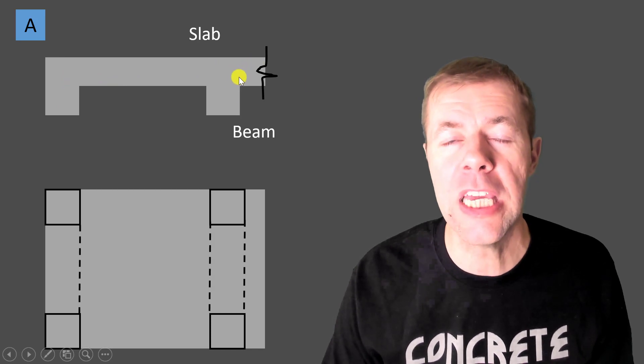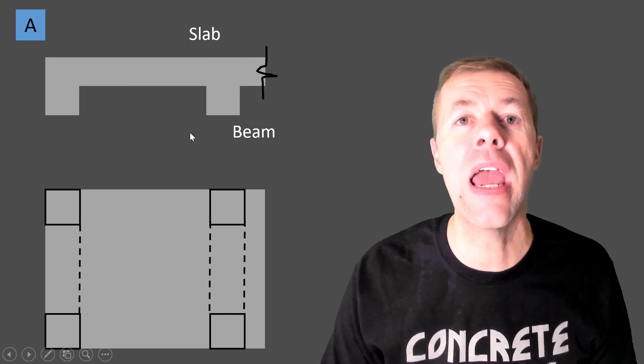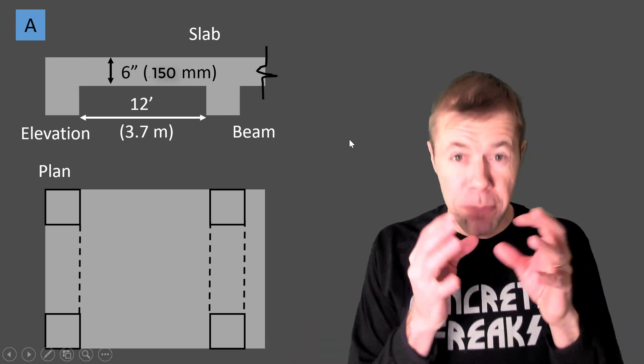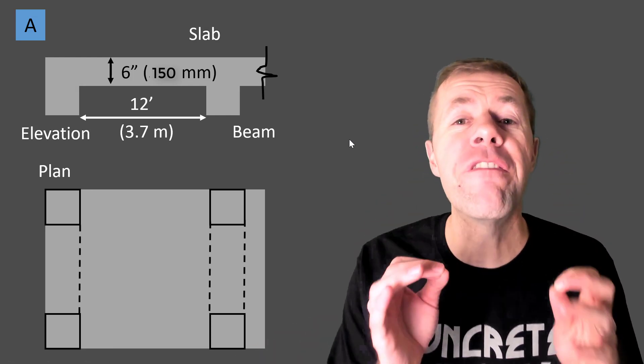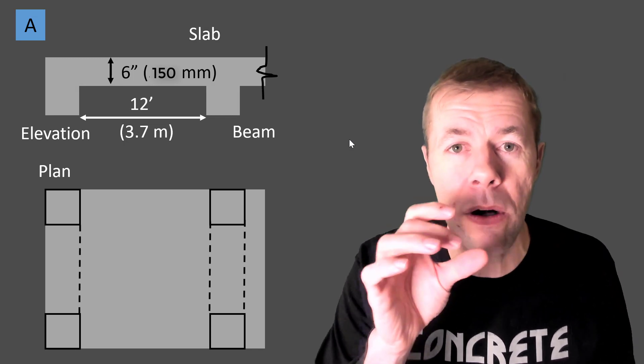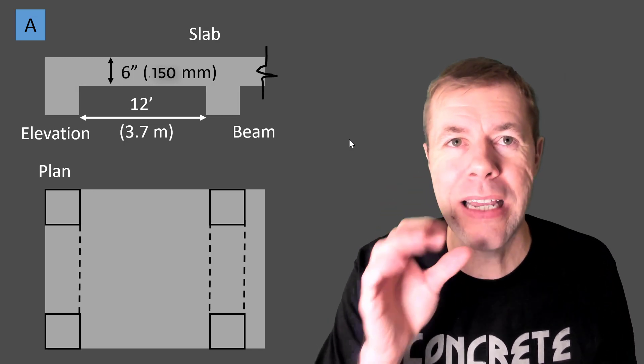This slab is continuous, it keeps going and that's case A and that means that that span length, the distance between the beams, can be 12 feet to make ourselves, allow ourselves to have a six inch slab.